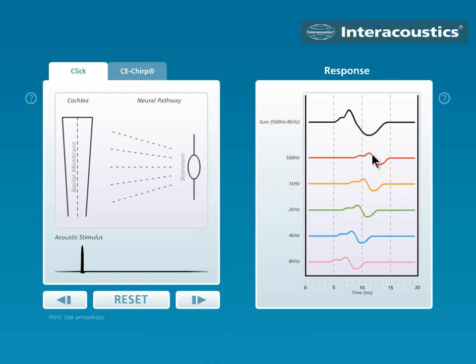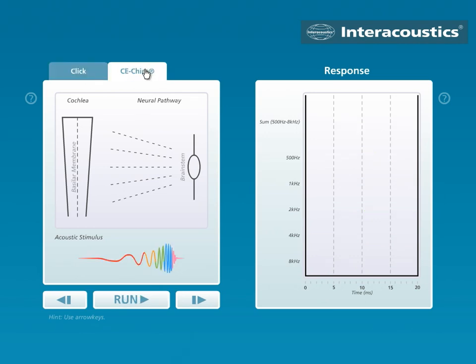And when they are summed up, which they always are in your ABR system, what you see is this. Our typical ABR response. All right. This is how CLICK works. Let's try to see how the CE CHIRP works.